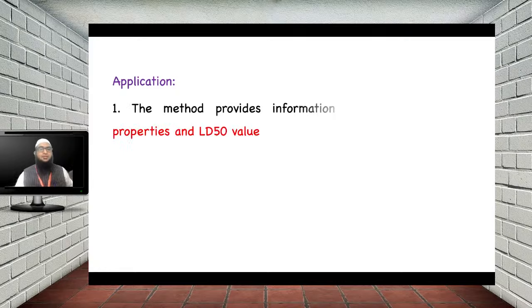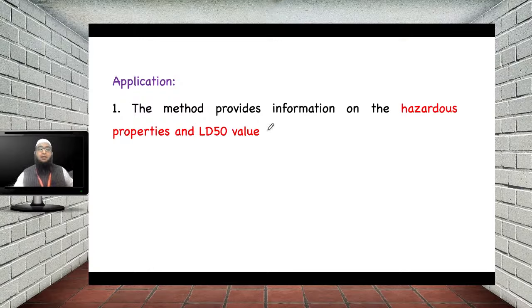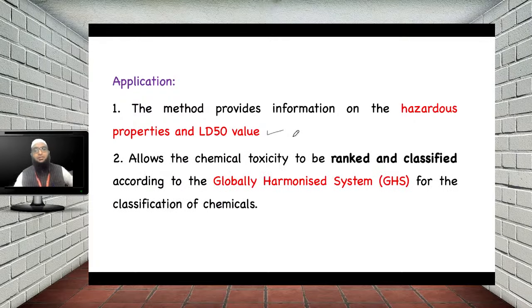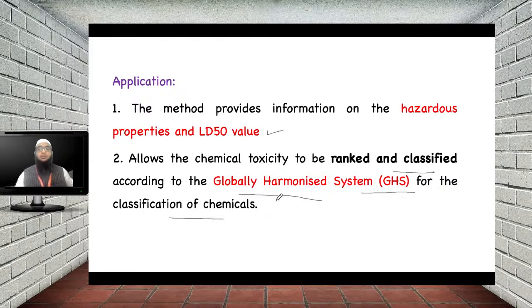The applications of OECD guidelines and toxicity studies include: providing information on hazardous properties and calculating the LD50 value; and allowing chemical toxicity to be ranked and classified according to the Globally Harmonized System (GHS) categories 1 to 5.